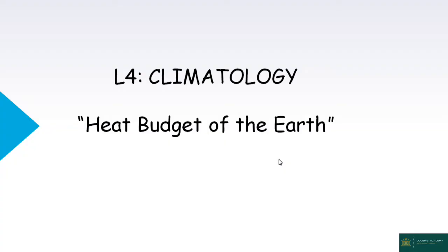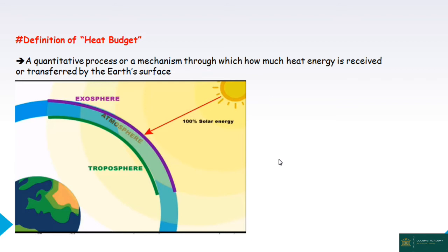Hi, good afternoon. I am going to talk about Geographic Climatology. Here is a section about the heat budget of the Earth. This is the topic: the heat budget. It is the maintenance of heat energy in the atmosphere. We will discuss incoming and outgoing heat energy. This is the diagrammatic representation and the definition of the heat budget.